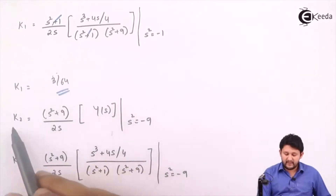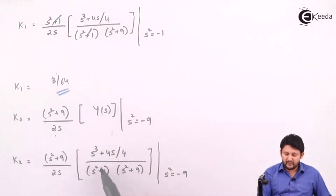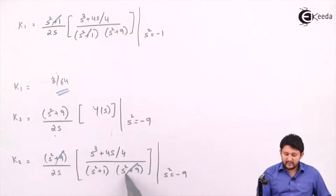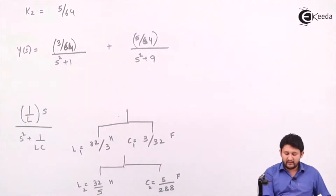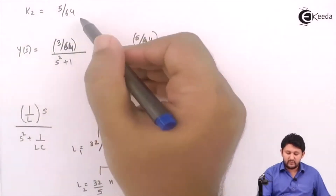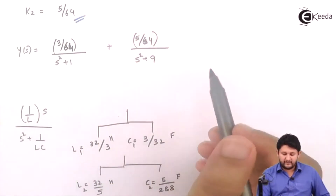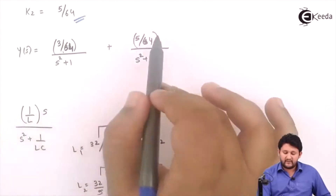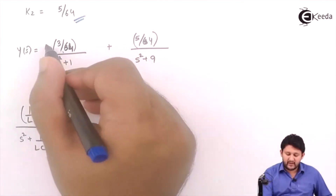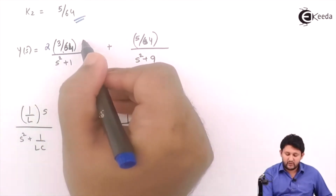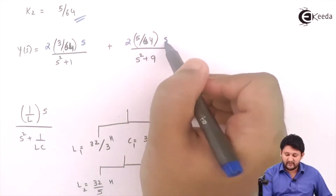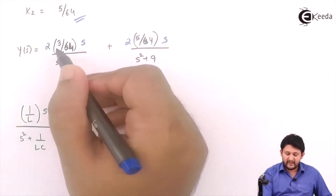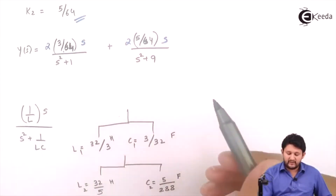For k2, similarly shift it and put the value. After cancellation, s² = -9. You get the value of k2 = 5, a positive shift. Now put the values of k1 and k2. You have 2s in both terms, divide, and you get the function for Y(s).